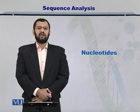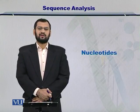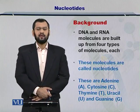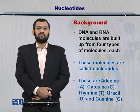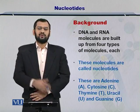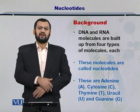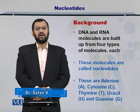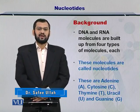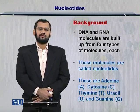Dear students, in this module we're going to discuss the various types of nucleotides that are there in the DNA and the RNAs. As you would know by now, the DNA is comprising of four different nucleotides. There are multiple copies of these nucleotides within a single DNA molecule. In case of the RNA, it is also comprised of four different nucleotides and an RNA molecule can have multiple copies of these nucleotides as well.